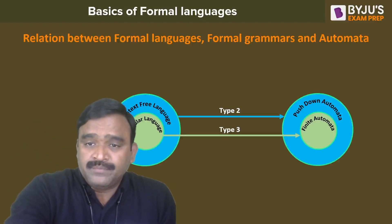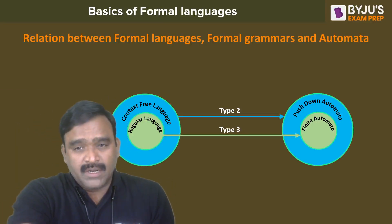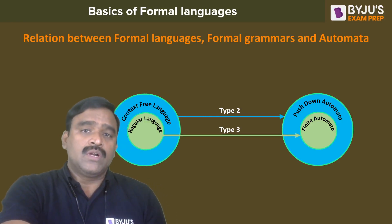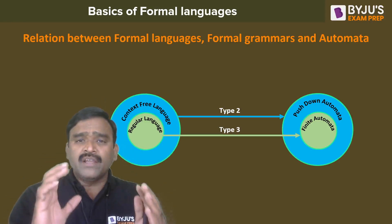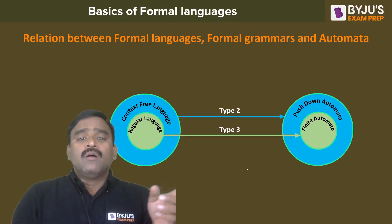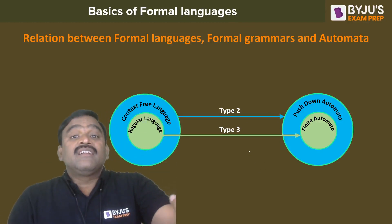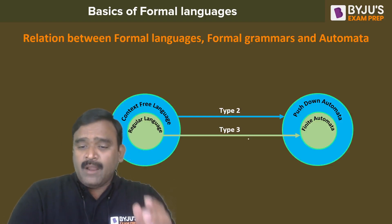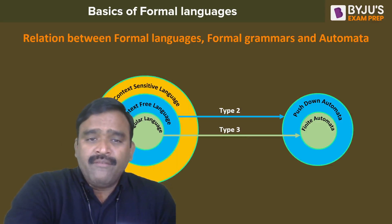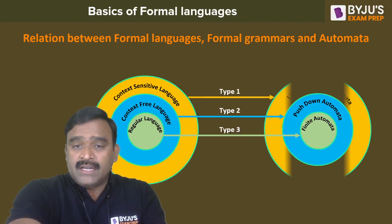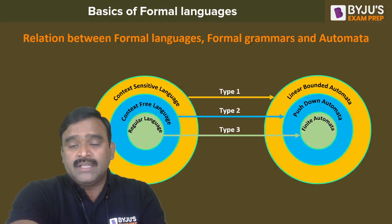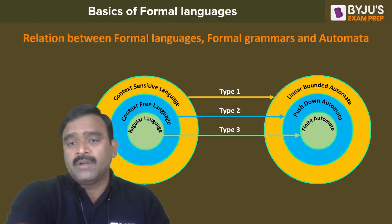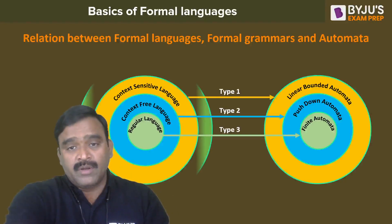Pushdown automata is more powerful than finite automata — it can recognize both regular languages and context-free languages. Every regular language is a context-free language, but not all context-free languages are necessarily regular. Every context-free language is also context-sensitive, and that is recognized by linear bounded automata, which is more powerful than pushdown automata and finite automata.